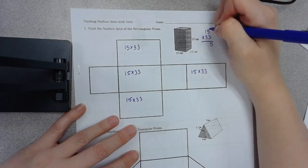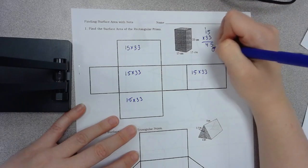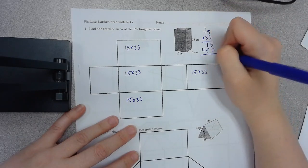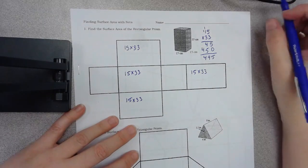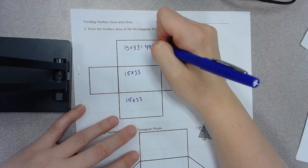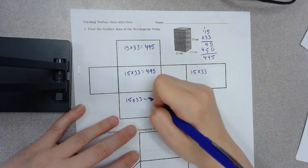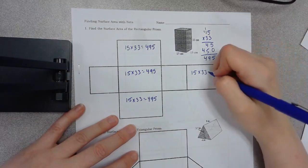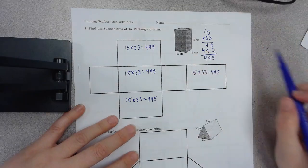15 times 33, 5 times 3 is 15, carry the 1, 45, 15, 1, 4, 495. You should have gotten 495. So the area of these rectangles is 495 and if you don't show your work you're kind of making your life harder because you'd have to keep doing it over and over when really you're just copying it from box to box.